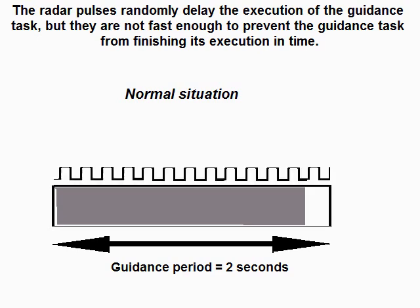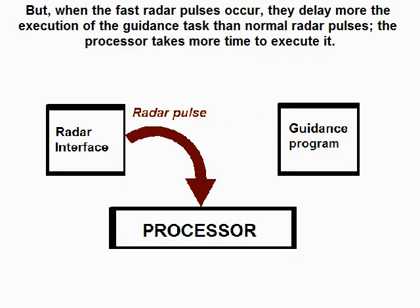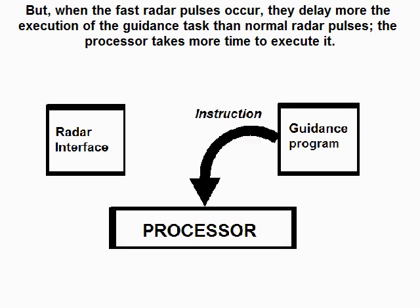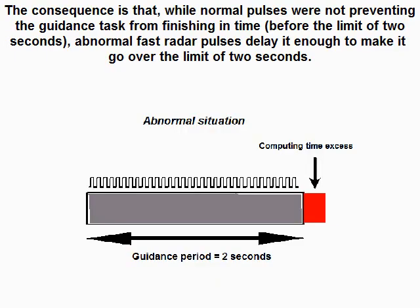The radar pulses randomly delay the execution of the guidance task, but they are not fast enough to prevent the guidance task from finishing in time. However, when the fast radar pulses occur, they delay the execution of the guidance task more than normal radar pulses — the processor takes more time to execute it. The consequence is that, while normal pulses were not preventing the guidance task from finishing within the 2-second limit, abnormal fast radar pulses delay it enough to make it exceed the 2-second limit.